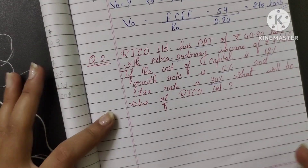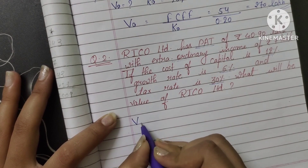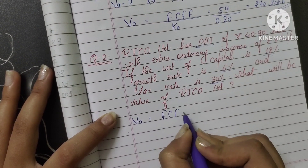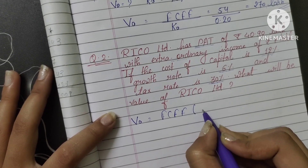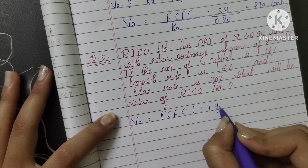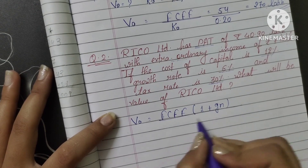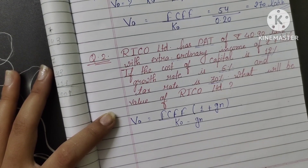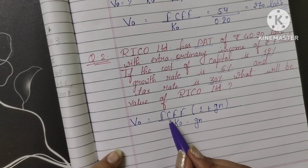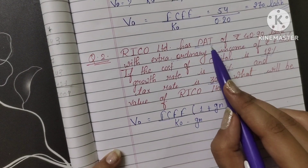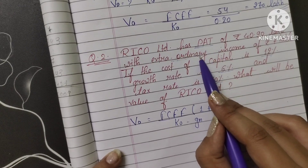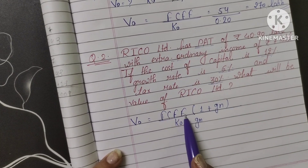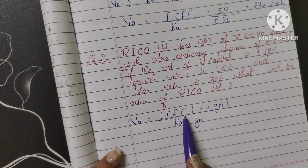Our formula for value of business is: value of business = free cash flow of the firm × (1 + Gn) divided by (Q minus Gn). We've learned this formula. However, we don't directly have the free cash flow of the firm — we have profit after tax and extraordinary income. So we need to calculate the free cash flow of the firm first.